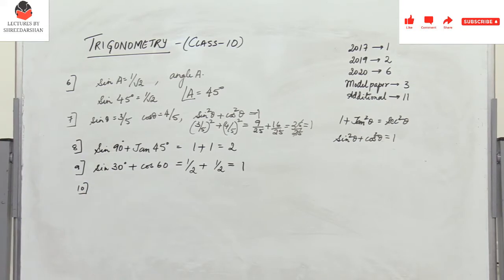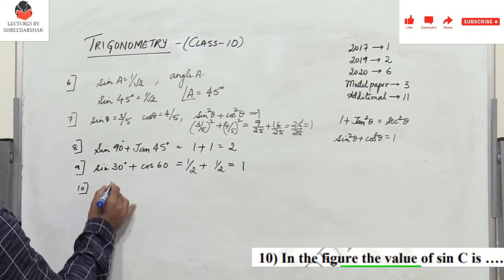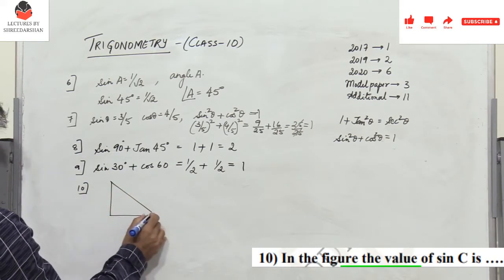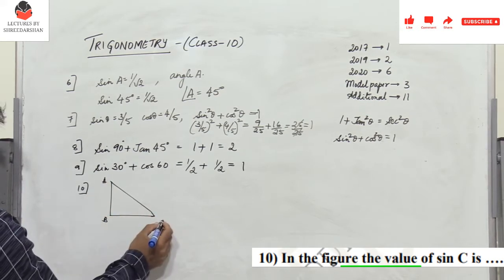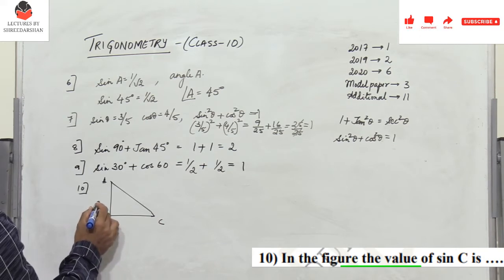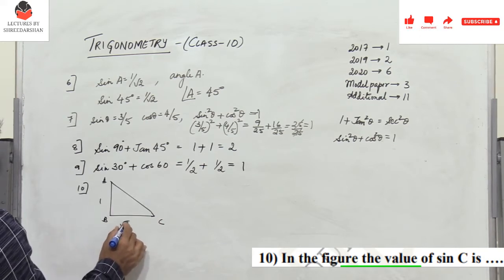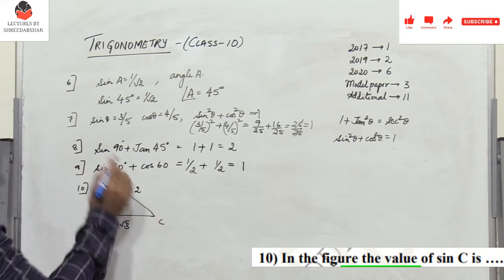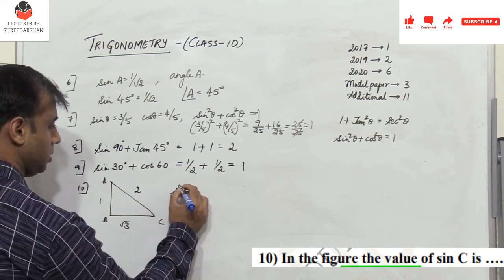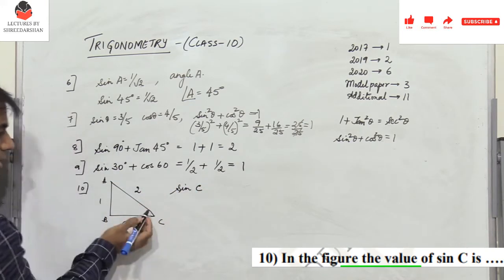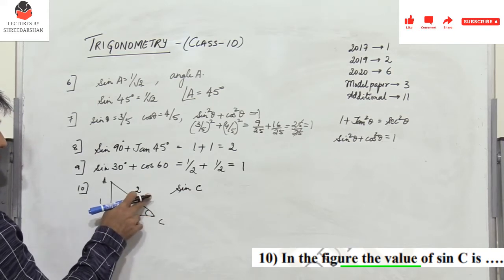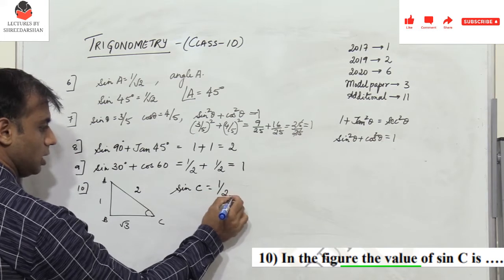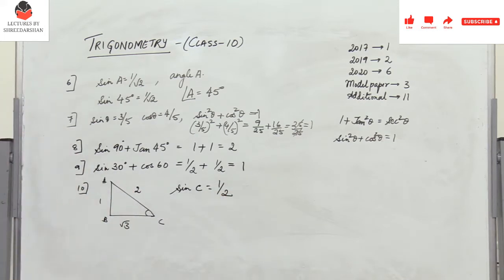Problem 10: given a right triangle with sides 1, √3, and 2, find sin C. The angle C is opposite the side of length 1, and the hypotenuse is 2. So sin C = opposite/hypotenuse = 1/2.